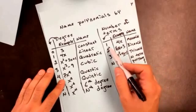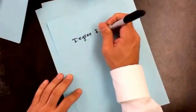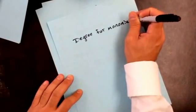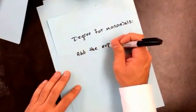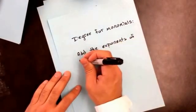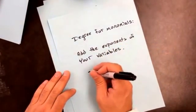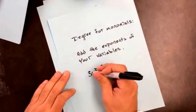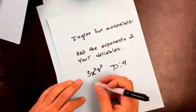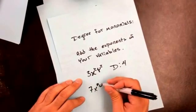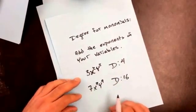The degree for a monomial is actually different, so I'll cover that now. For a monomial, you add all the exponents — and this only applies to monomials; everything else is as I already showed you. So if I have 3x squared y squared, this is a monomial because there's no addition or subtraction, and the degree is 4 because 2 plus 2. If I have 7x to the 7th y to the 9th, the degree is 16 because you add those two exponents together.